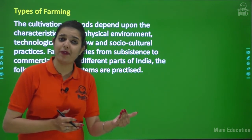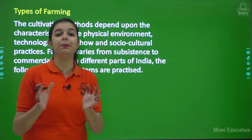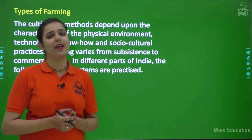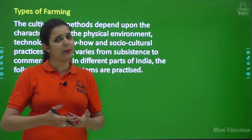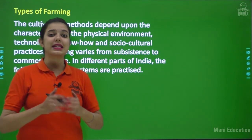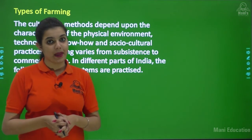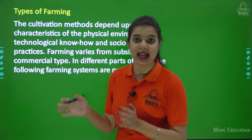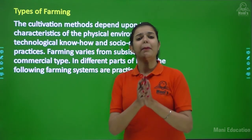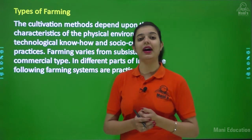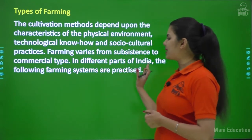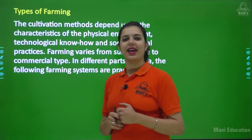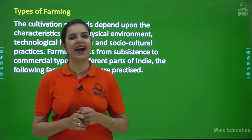Subsistence farming is the type of farming where the farmer produces food grains for satisfying his own needs as well as the needs of his family — it means the farmer produces grains for his own consumption. But in commercial farming, the farmer not only produces to satisfy his and his family's needs but also to sell in the market. This is the basic distinction between them. They have various subgroups and we will be discussing those in our further videos.